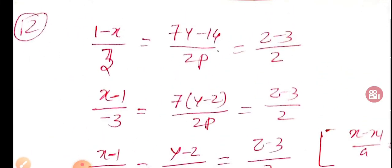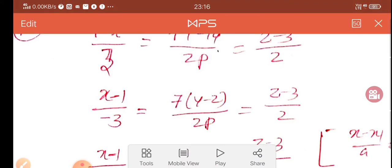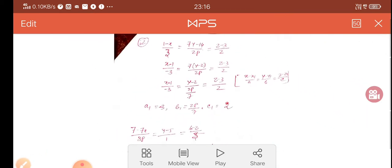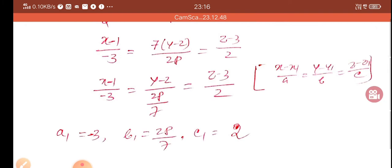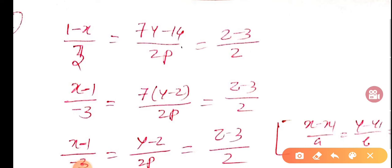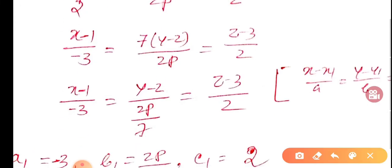1-x, change to x-1, then minus 3. The second is (7y-14)/(2p) and (z-3)/2. So it's (x-1)/(-3), then (7y-14)/(2p) which is (y-2)/(2p/7), then (z-3)/2.